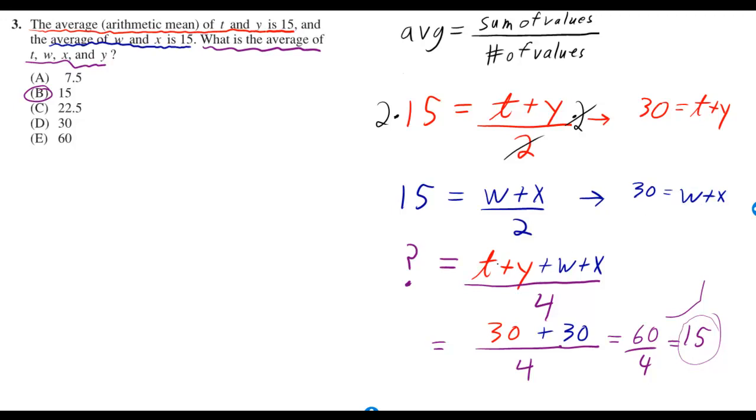And then you replace T plus Y with the 30, and you also replace W plus X with 30. And then you have 30 plus 30 over 4. So you have 60 over 4, which is 15.